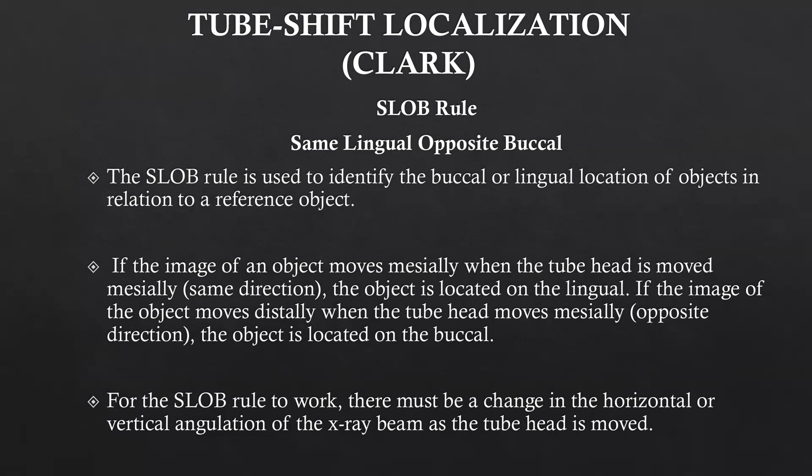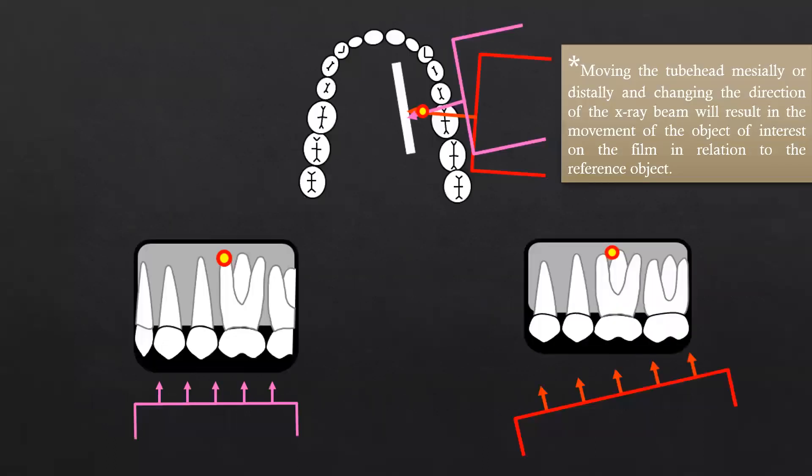For the SLOB rule to work there must be a change in either horizontal or vertical angulation of the x-ray beam as the tube head is moved. In this picture you can see two projections made with a shift in horizontal angulation. There is a change in direction of the beam falling on the object and the radiograph, and by comparing the two images using the same lingual opposite buccal rule we can identify the exact location of the foreign body or the impacted tooth.